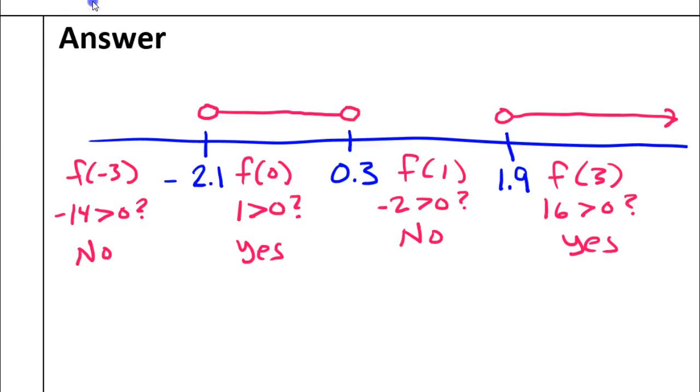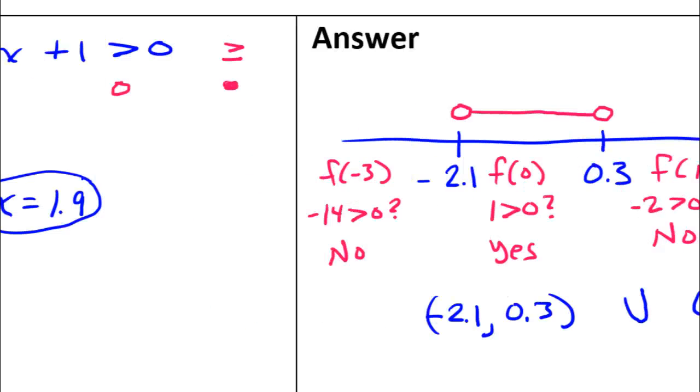But, we are to record our solutions in interval notation as well. So, our solutions are going from negative 2.1 to 0.3 approximately. So, we've got negative 2.1 to 0.3. Notice I'm using parentheses, not square brackets, to show that we're not including the endpoints. Union, and 1.9 to infinity. Again, round parentheses. That would be the answer to number 4.